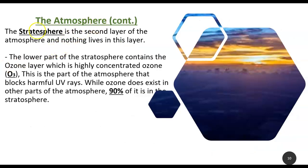The next sphere is the stratosphere - that's the second layer of the atmosphere. Nothing lives in this layer. The lowest part of the stratosphere contains that ozone layer that we mentioned earlier that protects us from harmful radiation. It is actually just three oxygen molecules hooked together. The ozone does exist in other parts of the stratosphere, but 90% is in the stratosphere.